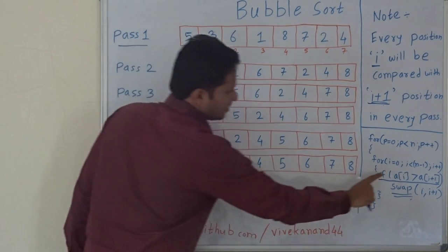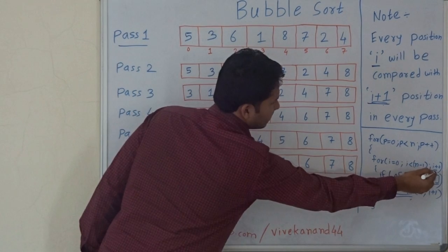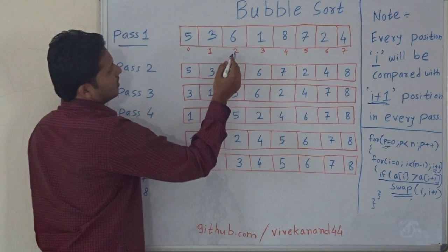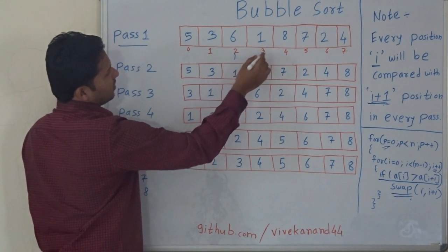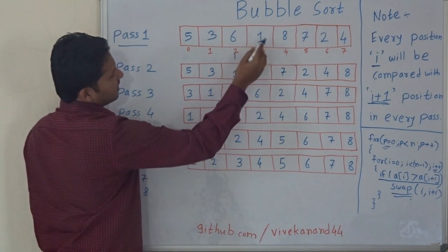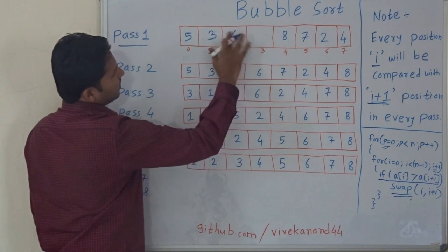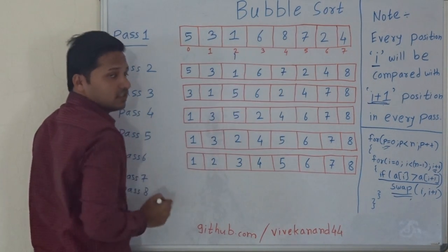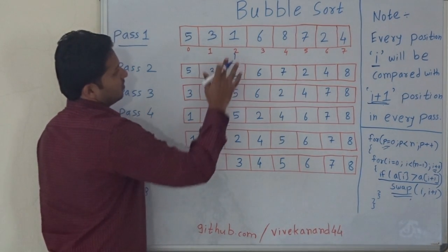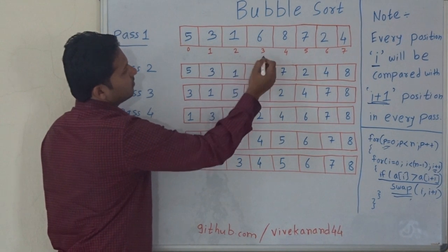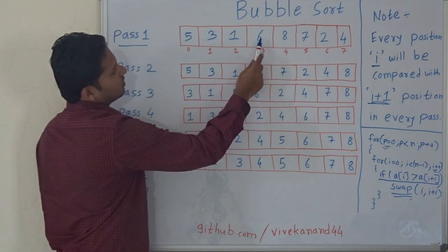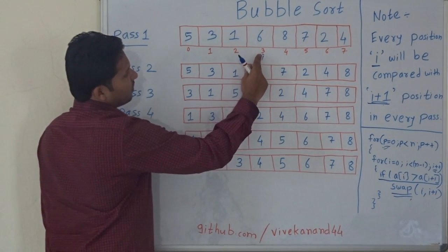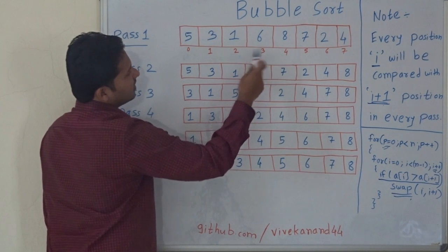You can see in this code that i is being incremented every time for every pass. Now i is 2, so i plus 1 is 3. 6 is greater than 1 — yes, so we will swap: 1 is here, 6 is here. Let's increment i. So 6 is greater than 8? No. So we don't swap and we directly increment i.